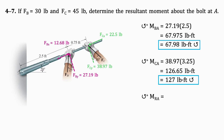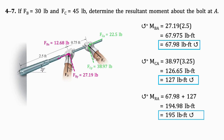Finally, to get the resultant moment, we just add the two moments together. By doing so, we get 195 pound-feet in the counterclockwise direction. And there you have it.